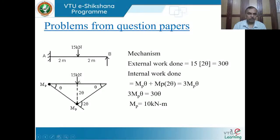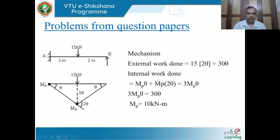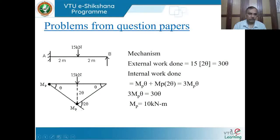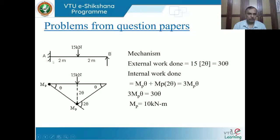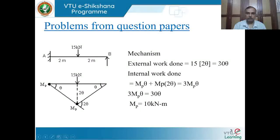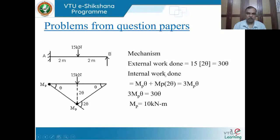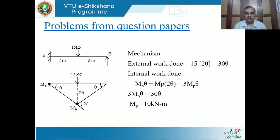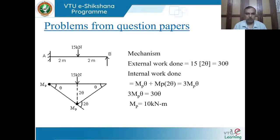External work done by the 15 kN load equals 15 × delta = 15 × 2θ = 30θ. Internal work done by the plastic hinges: the hinge at the fixed end contributes MP×θ, and the hinge at center contributes MP×2θ, giving total internal work 3MP×θ. Equating external and internal work: 3MP×θ = 30θ. Cancelling θ gives MP = 10 kN·m. Such problems can be solved very quickly for any combination of loads.